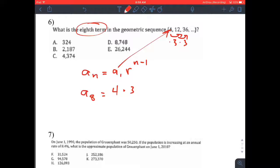n is 8, so n minus 1 is going to be 7. So it's 4 times 3 to the 7th.